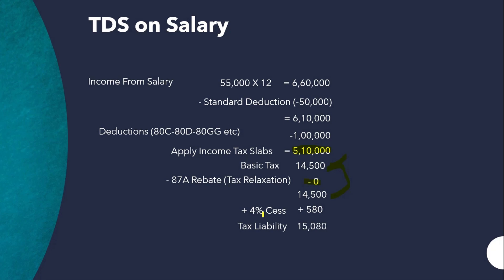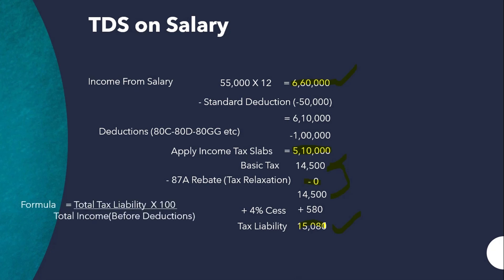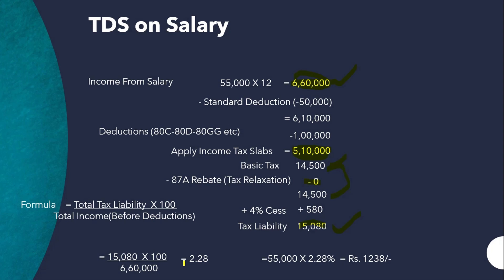Adding 4% cess on ₹14,500, the total tax liability of the employee is ₹15,080. Now for the TDS formula, the total income before deductions is ₹6,60,000 (not ₹5,10,000, which is after deductions). The formula is: TDS rate = (Total Tax Liability × 100) / Total Income before deductions.